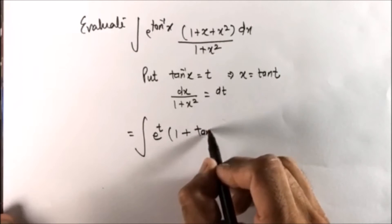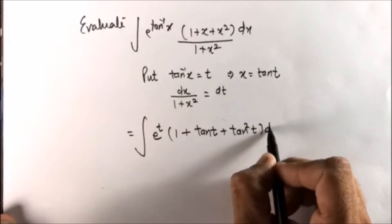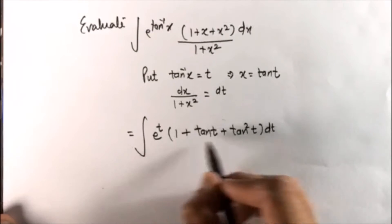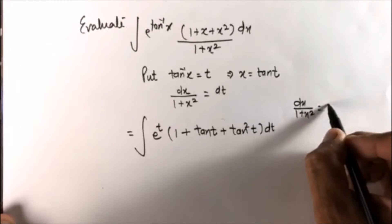x becomes tan t, x squared becomes tan squared t dt, and the entire of dx over 1 plus x squared now is dt.